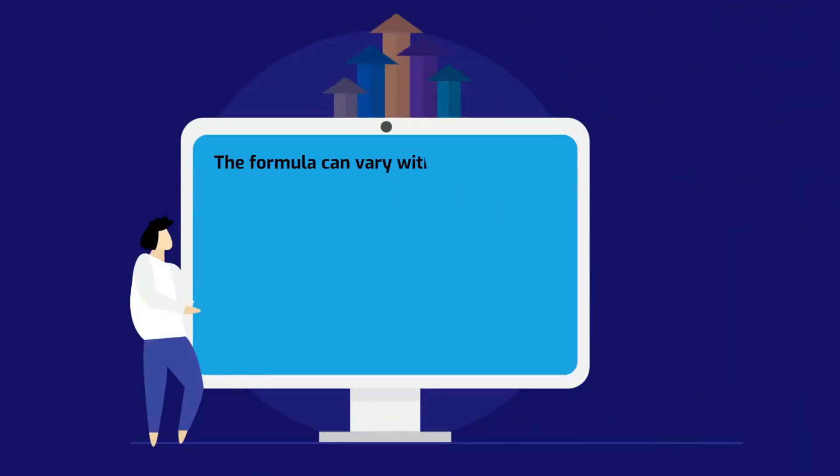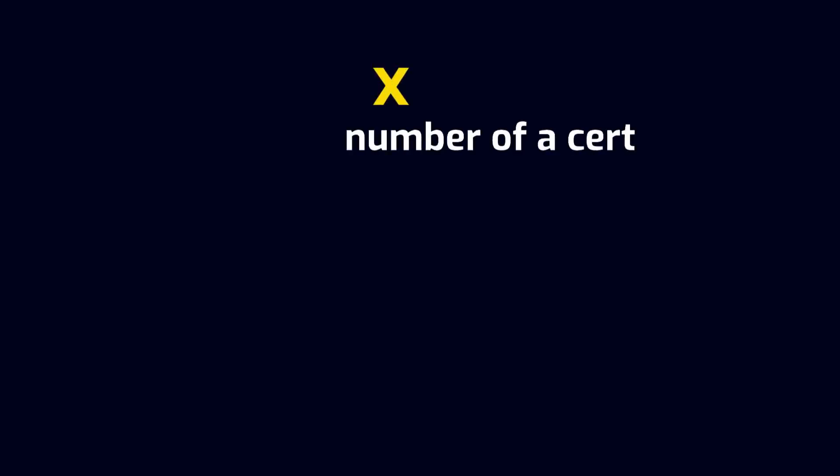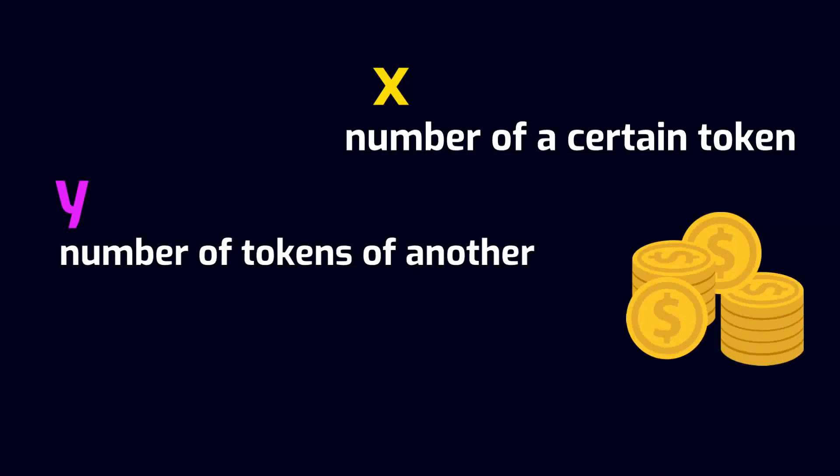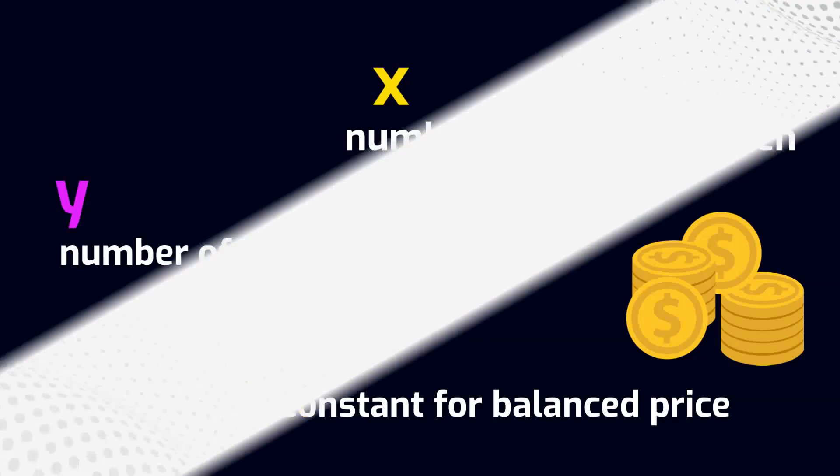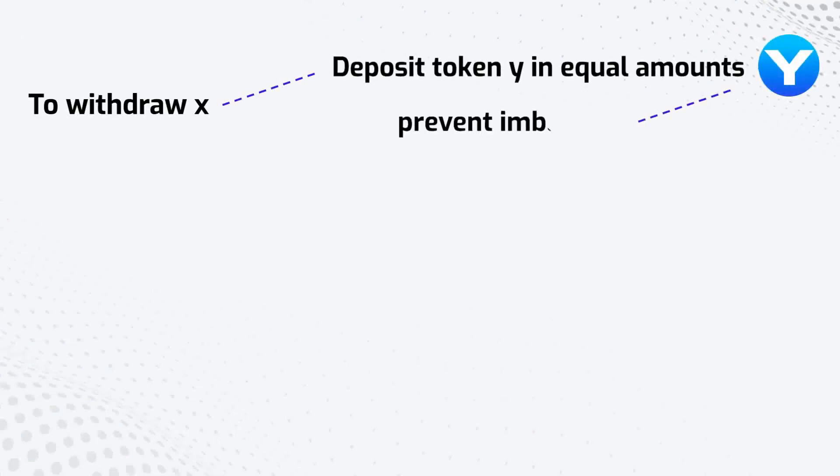The formula can vary with each protocol, but the most common one used by already established protocols is X times Y equals K, where X stands for the number of a certain token deposited in the liquidity pool, Y stands for the number of tokens of another coin in that same pool, and K stands for the constant and balanced price. The formula essentially means that if you want to withdraw a certain amount of token X, you must also deposit token Y in equal amounts to prevent imbalance.